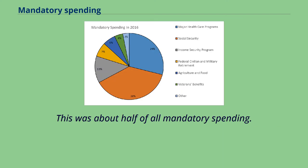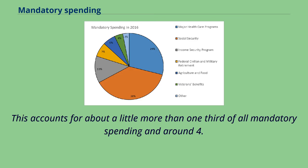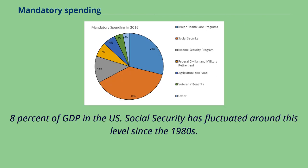In FY 2016, Social Security accounted for 38% of mandatory spending — about one-third of all mandatory spending and around 4.3 to 4.8% of GDP in the U.S. Social Security has fluctuated around this level since the 1980s.